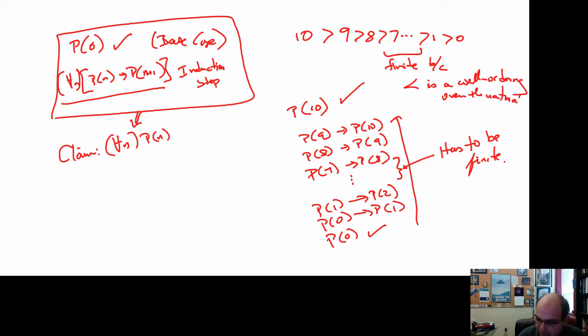I told you when we were doing well-orderings that they would actually come back and that they were important. Well, this is their moment to shine. This is why they're so important. Well-orderings is what let us justify induction. So here we have a sequence. This is why we believe that P of 10 is true. Because it must be true for some smaller n and for some smaller n. And eventually I have to get down to 0, and that's my base case.